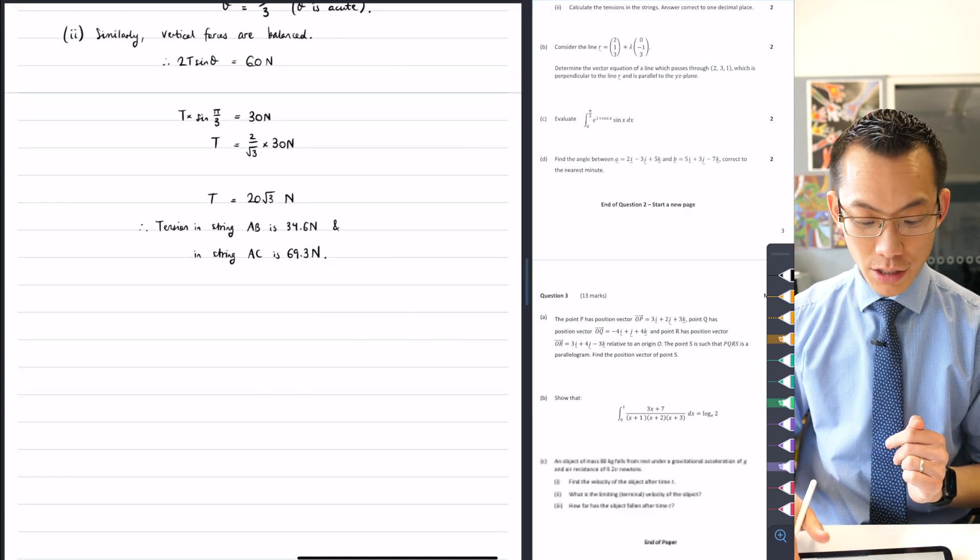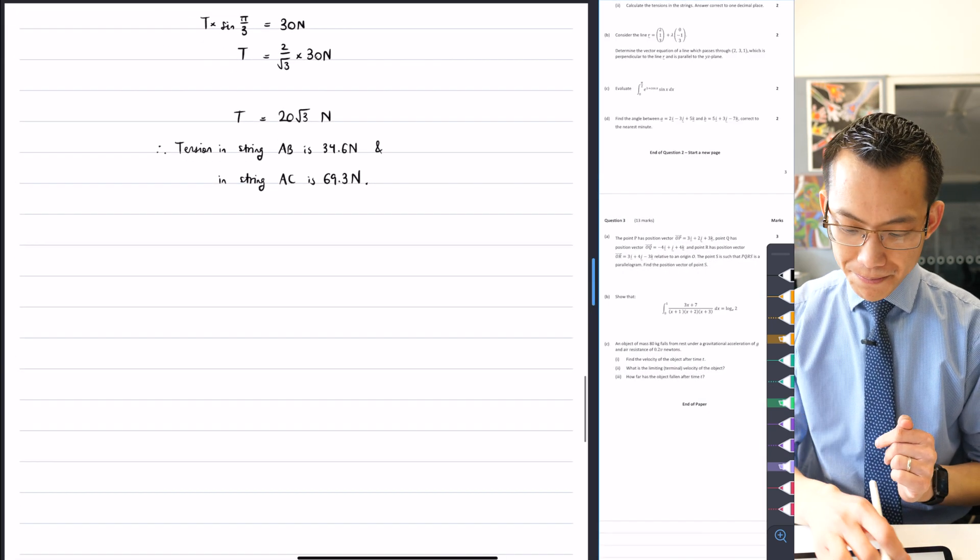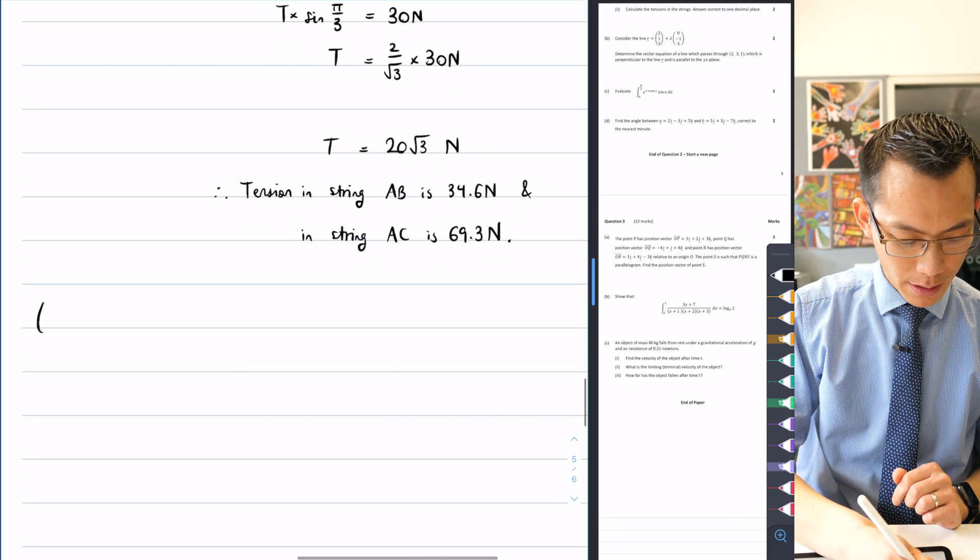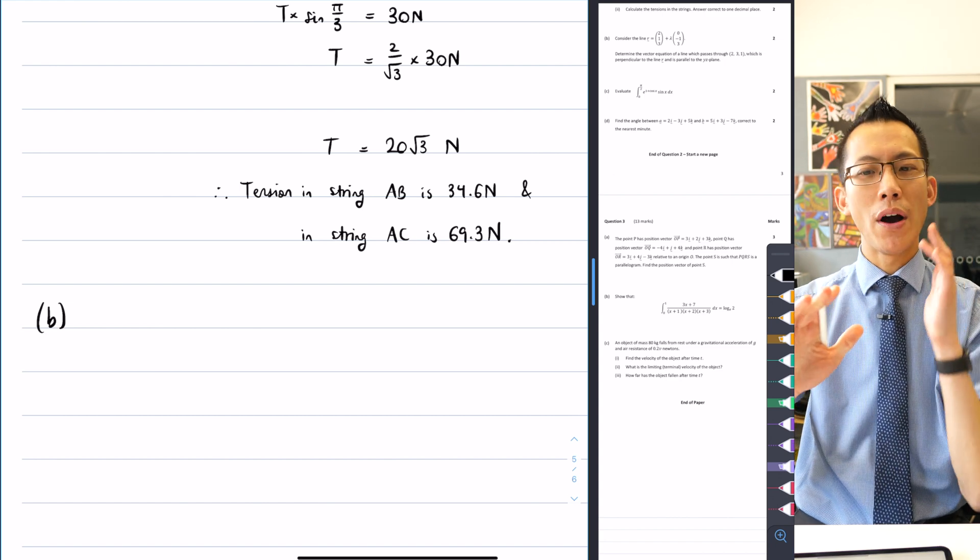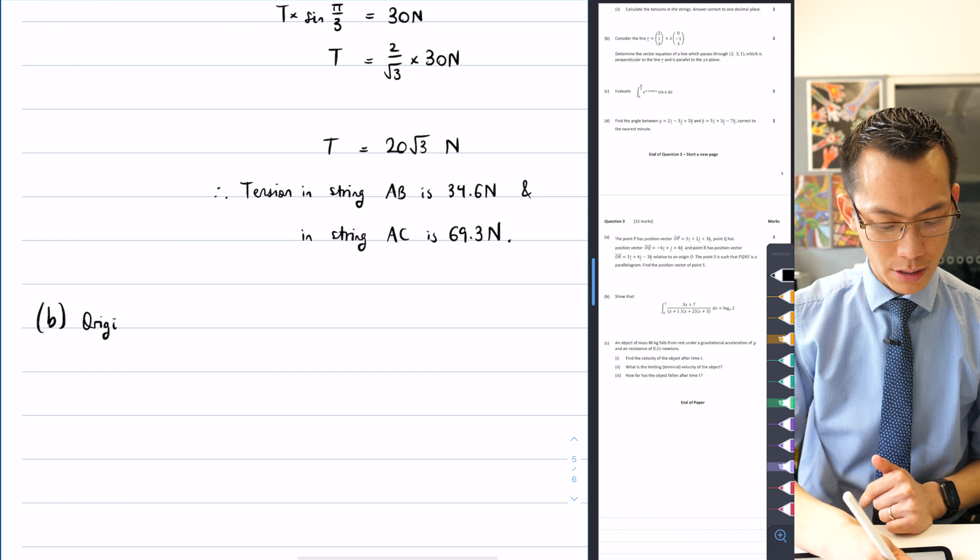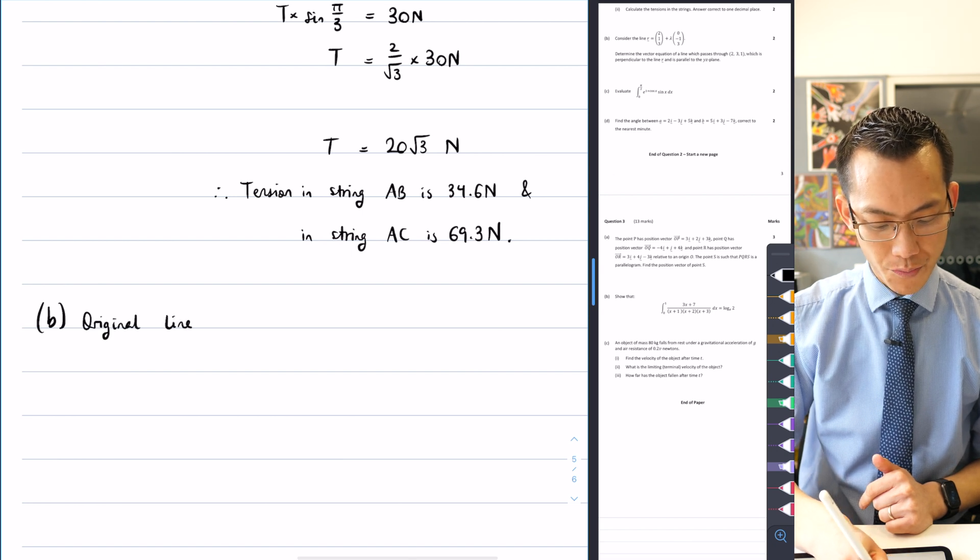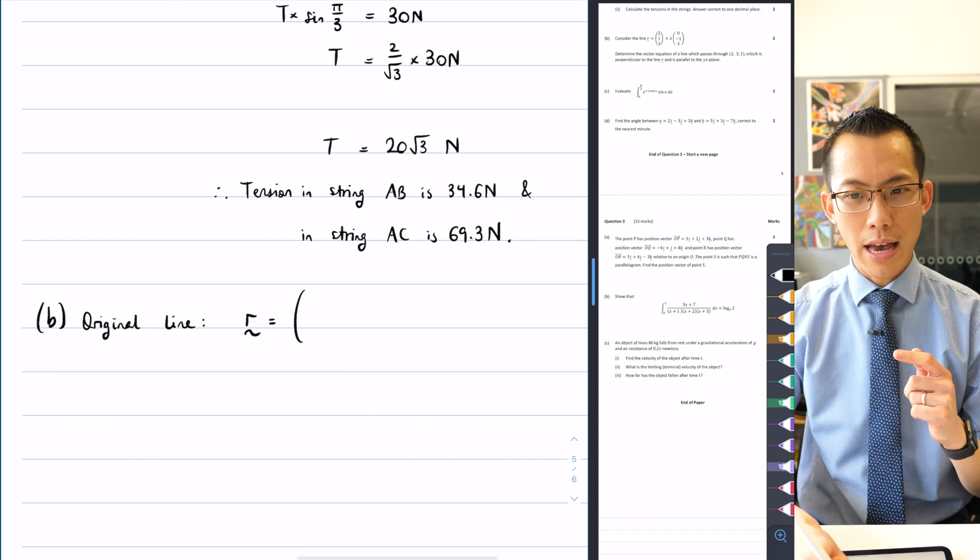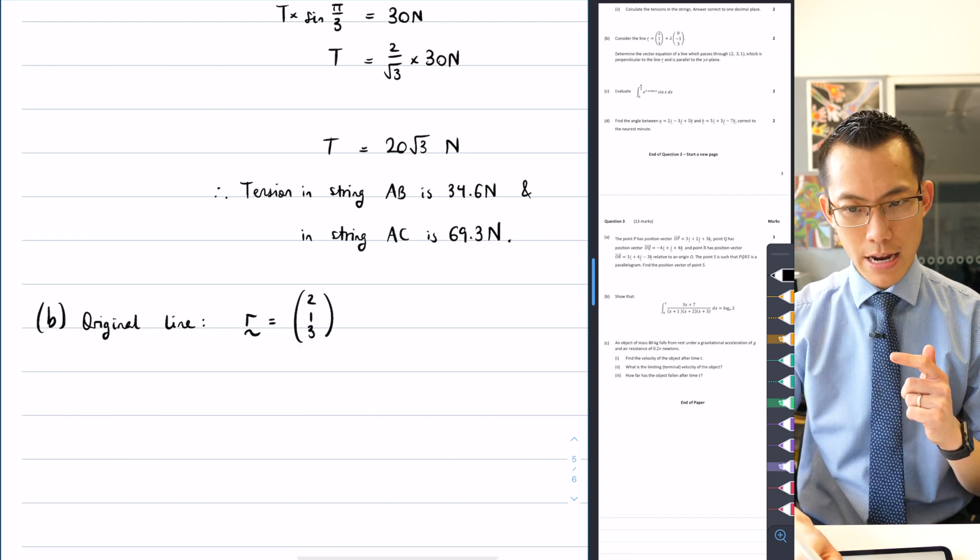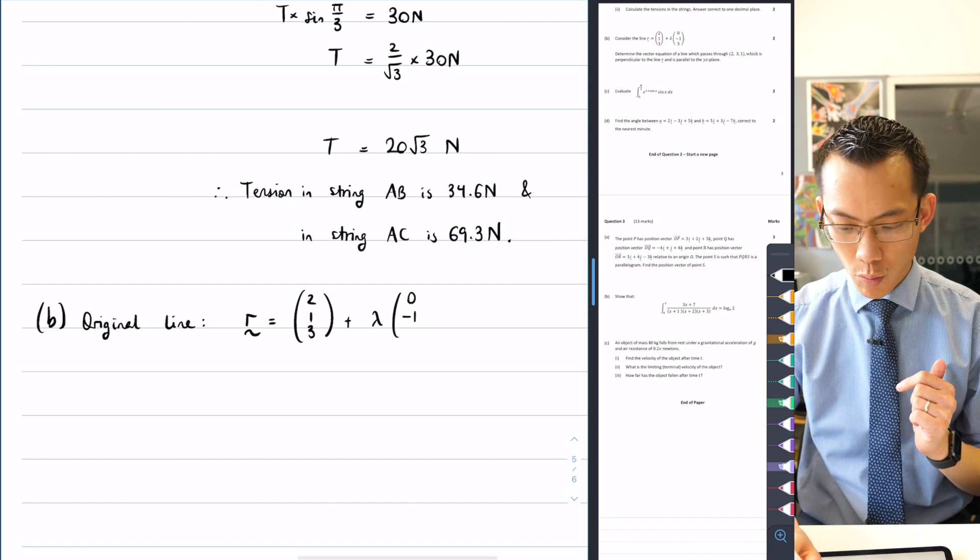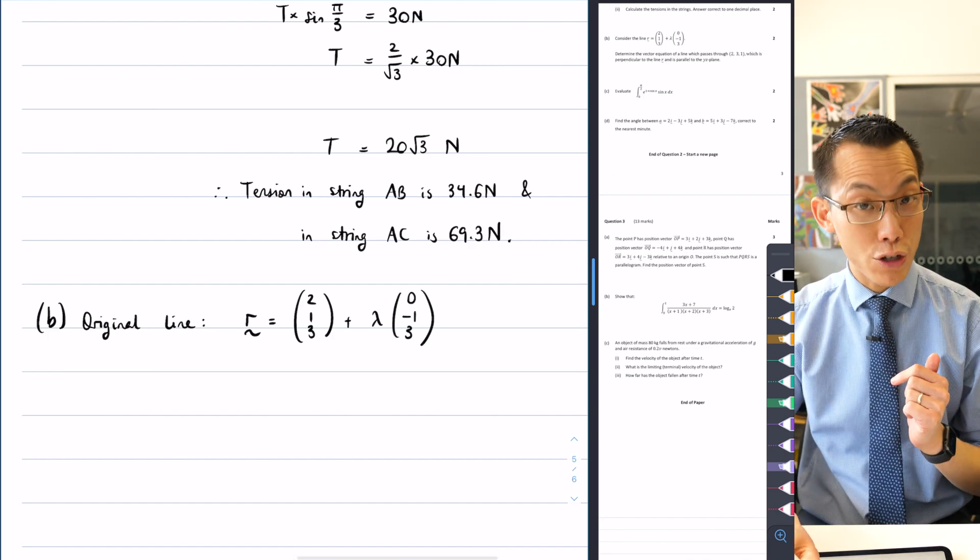So let me try and illustrate to you how I would do it. This is part B. So how does our working actually play out? Well, the first thing that I want to say is, okay, here's the original vector or yep, the original line, I should say, original line, which is r equals. And it was given to us as 2, 1, 3 plus lambda of 0, negative 1, 3. So there's the original line.